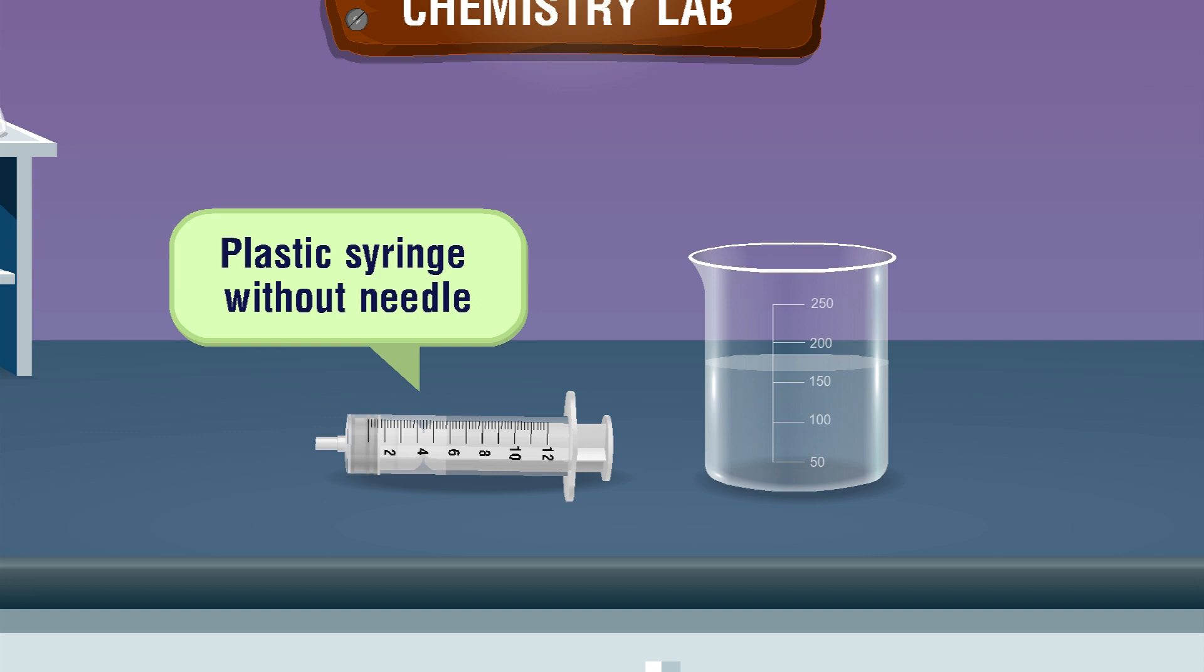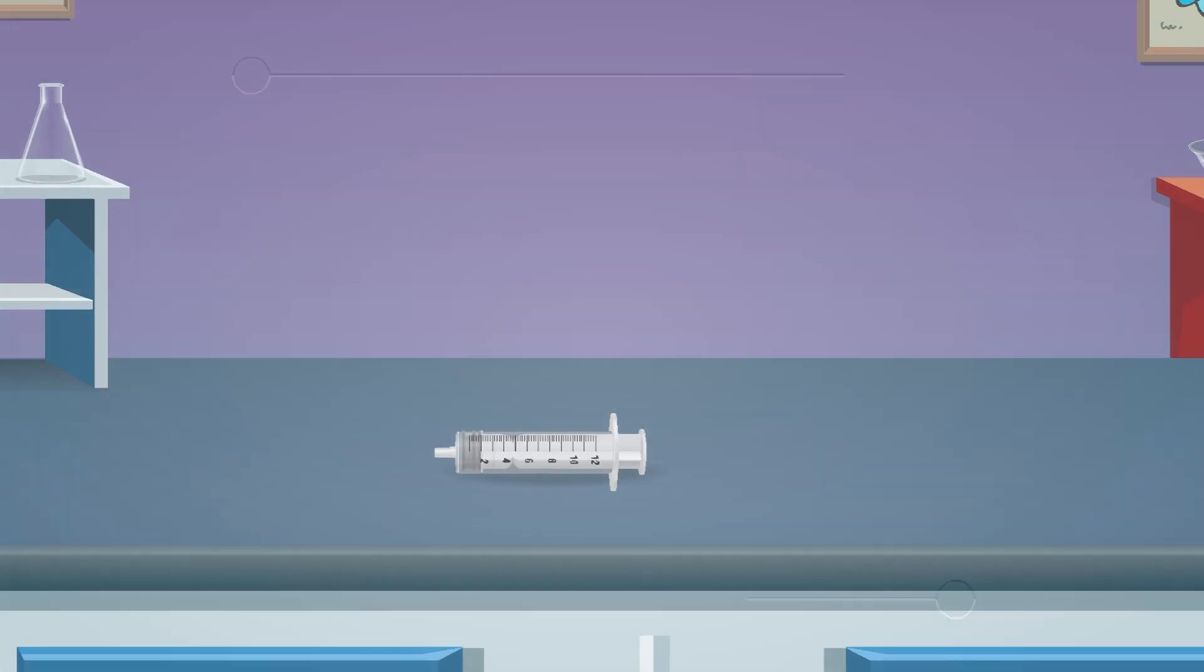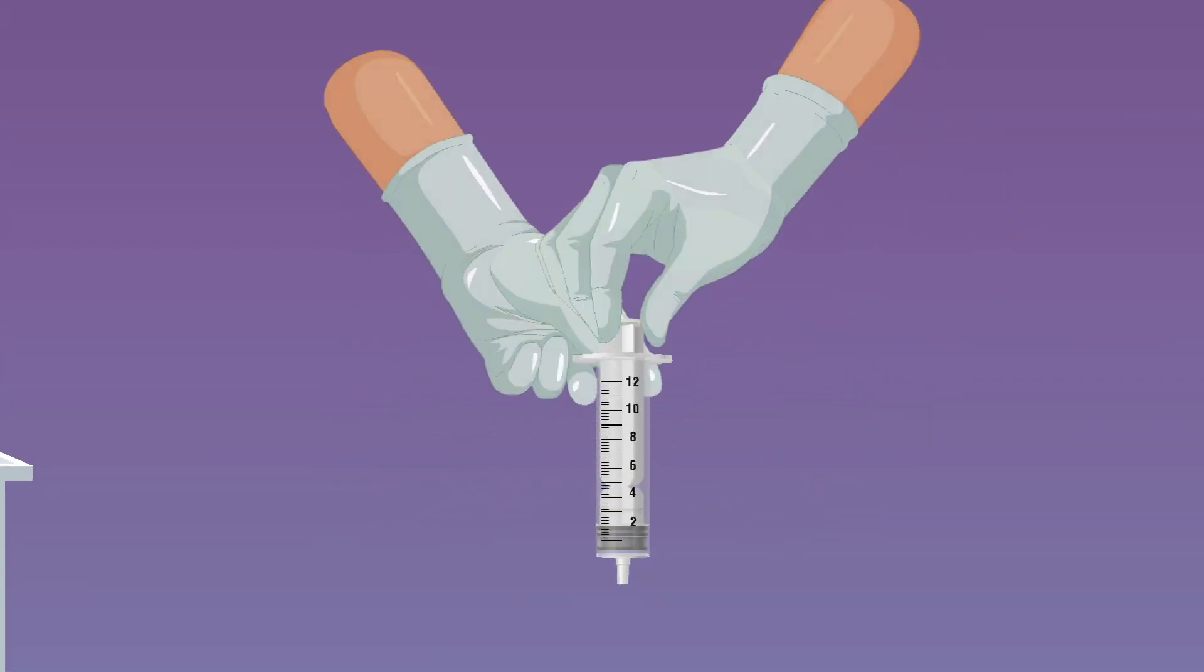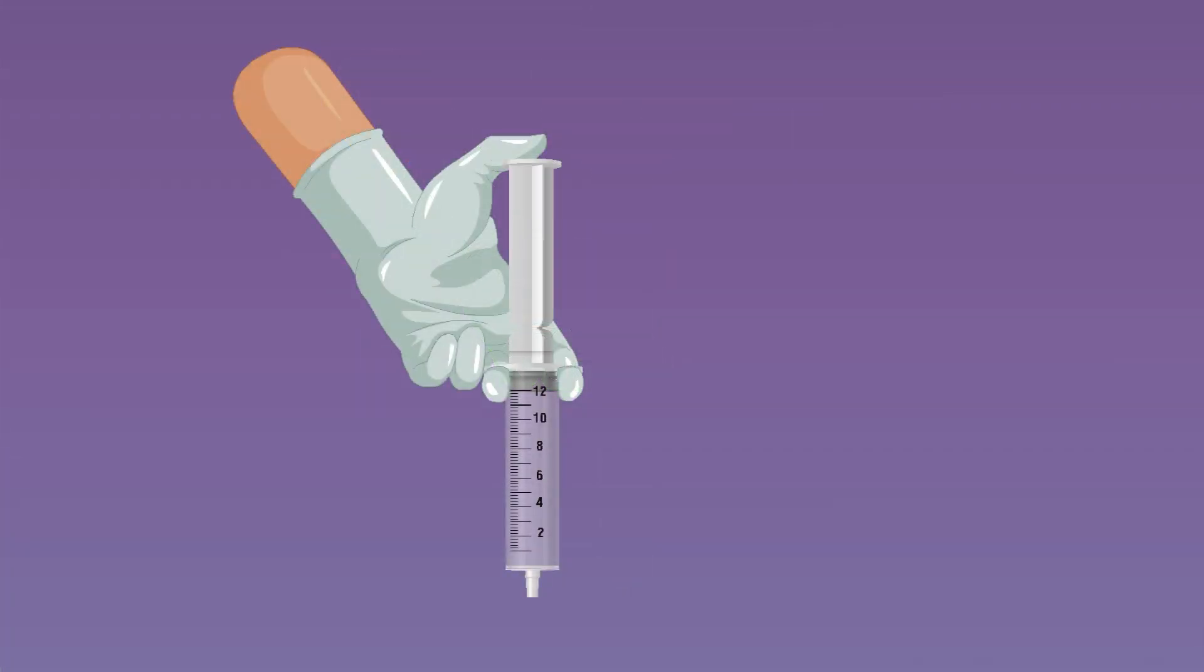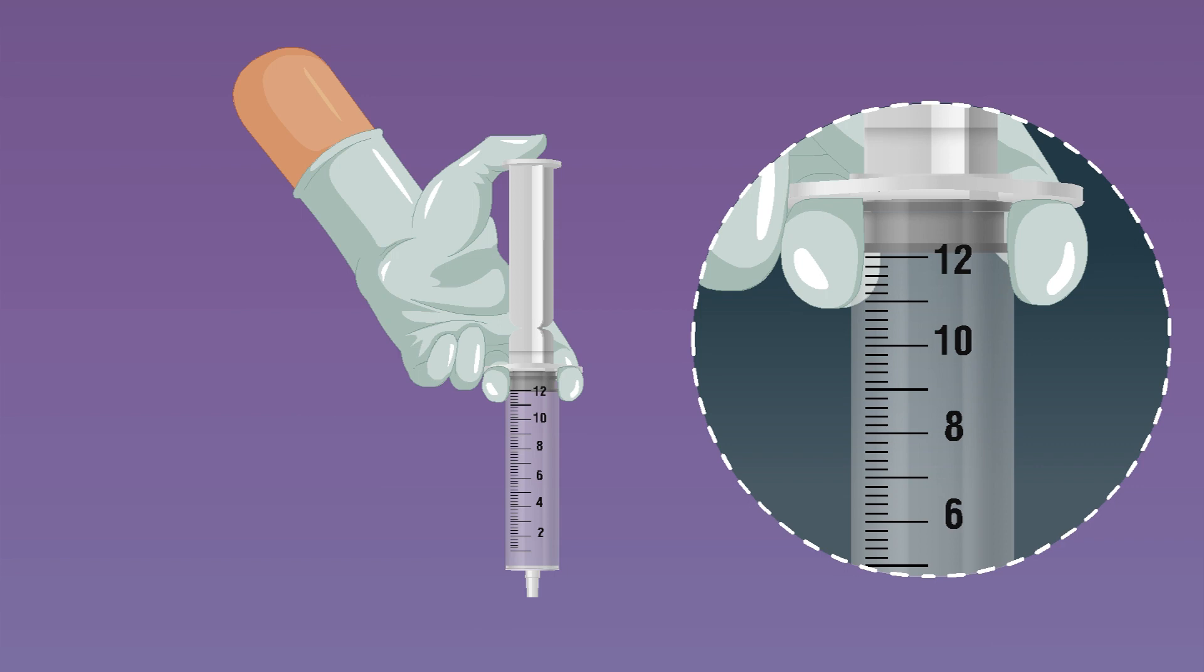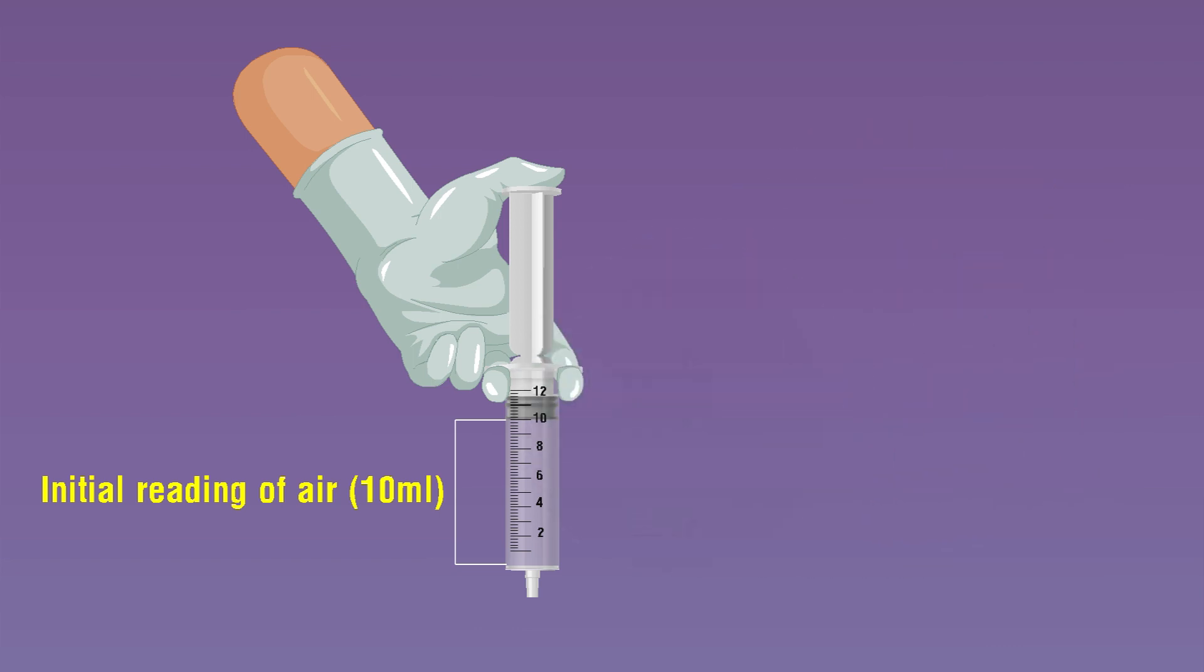Plastic syringe without needle and water. Procedure: Take a syringe and hold it in your hand. Pull the piston to its maximum level, then push the piston into the syringe cylinder and bring it to a certain level. Note and record the reading of the piston in the syringe, that is the initial reading of air.